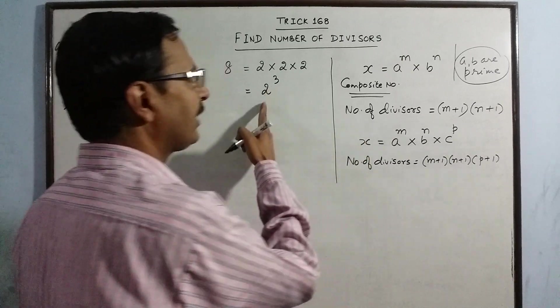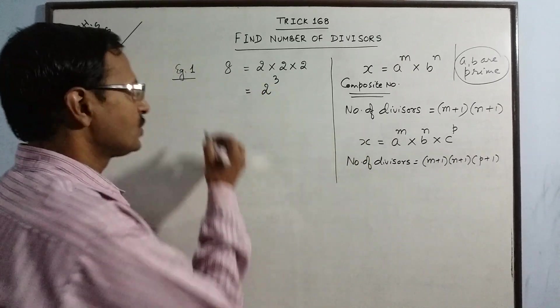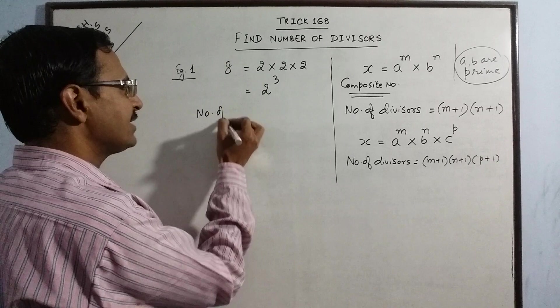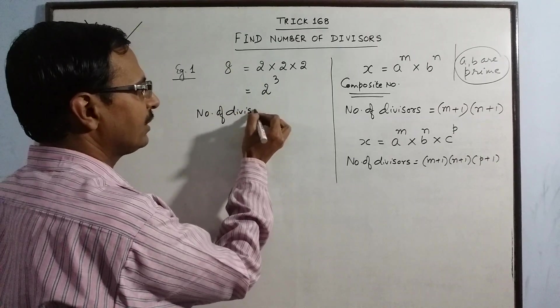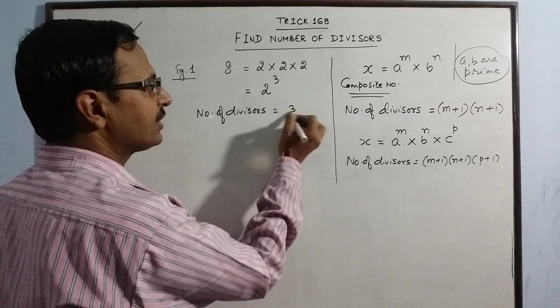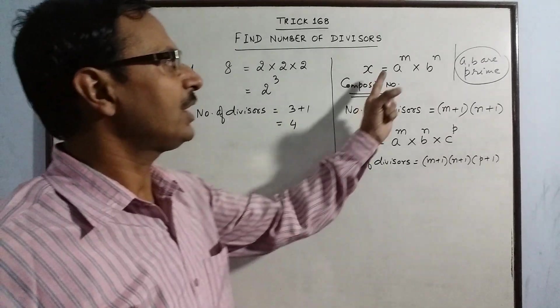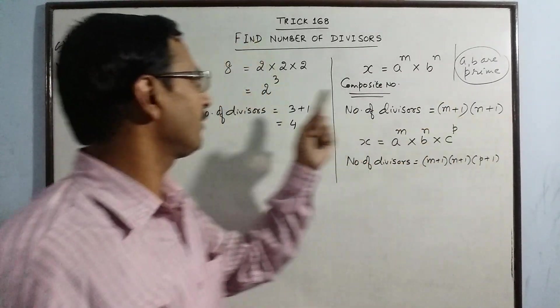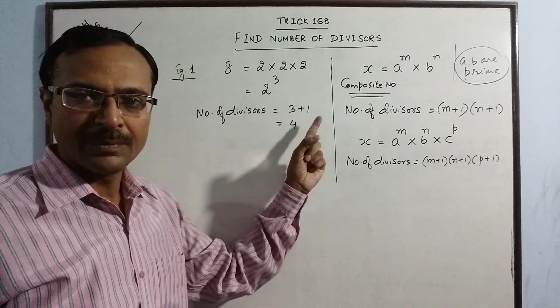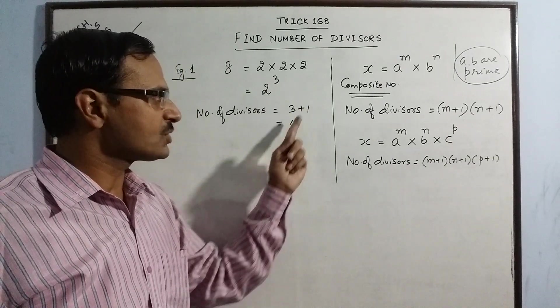Now we have only one factor 2 repeated 3 times. So number of divisors of 8 will be power 3 plus 1 that is 4. So here we had two factors, so two terms. Here we have only one factor, so only one term and power is increased by 1, so 4.